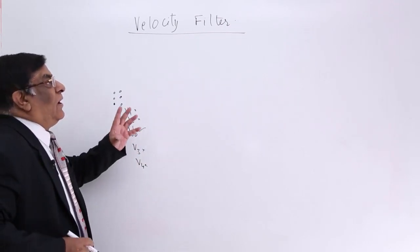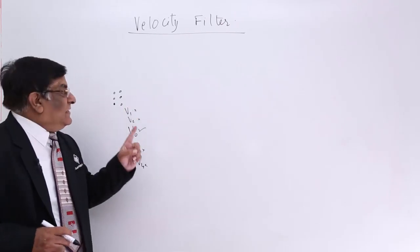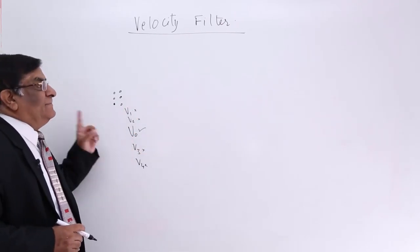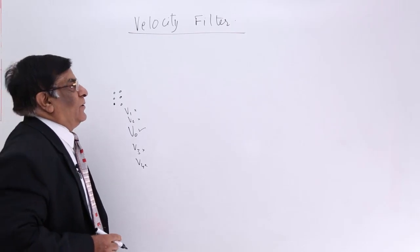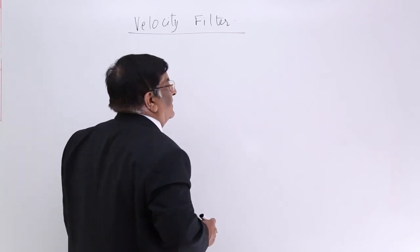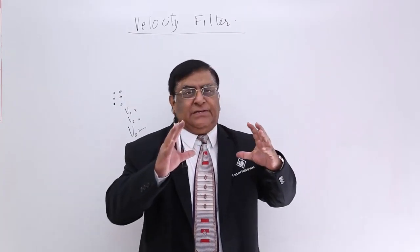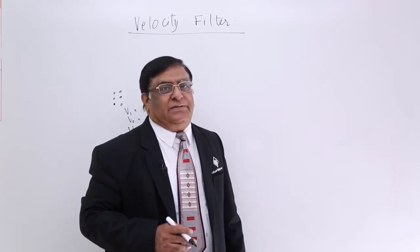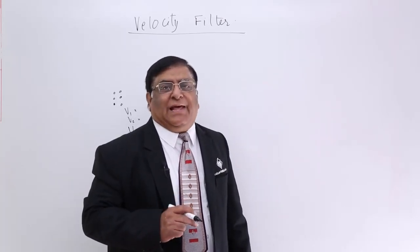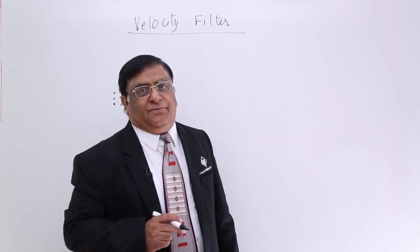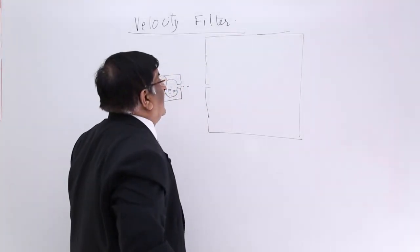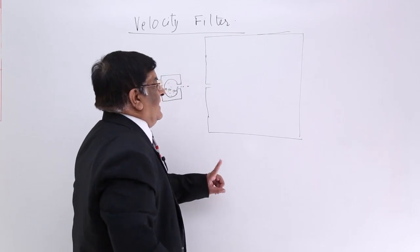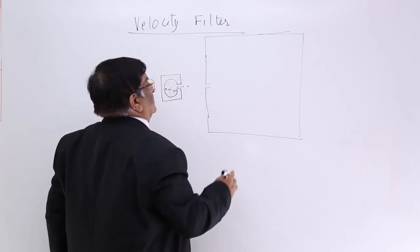So how can we make a filter for this? See the principle: we take a space and in that space we have both types of fields, electric field as well as magnetic field. First, there is an electric field. Let's say electric field has a direction upward.